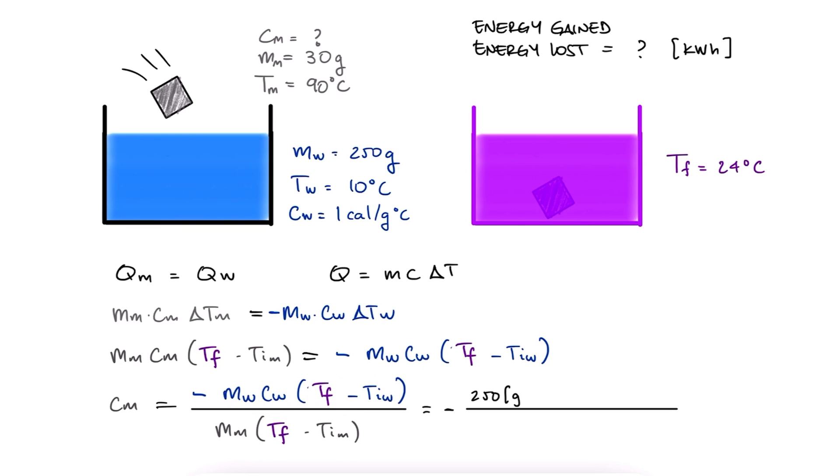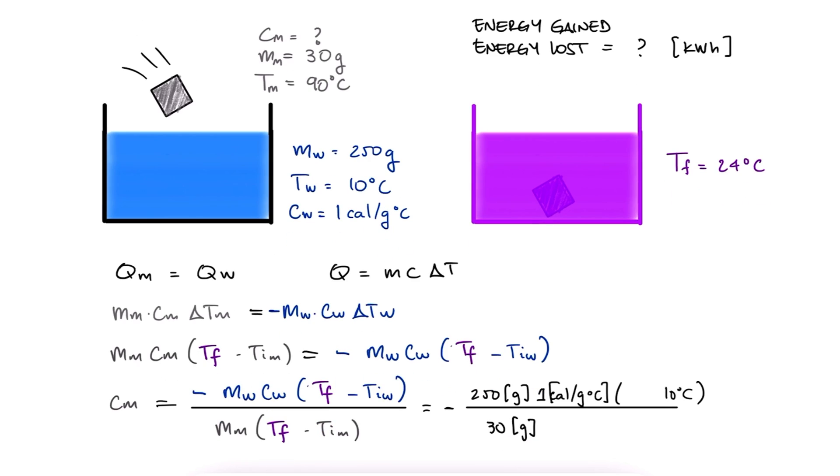We substitute the value for mass, water specific heat, initial temperature for the water, initial temperature for the metal, and the final temperature for both, to find that the specific heat of the piece of metal is 1.76 repeating calories per gram degree Celsius.